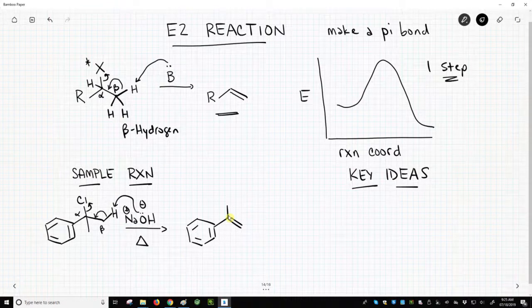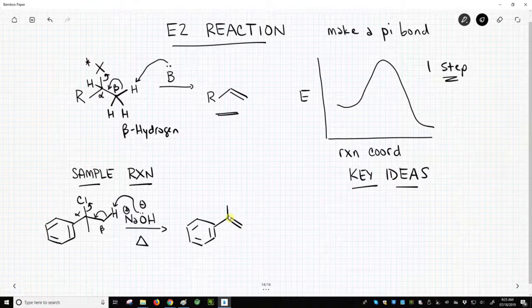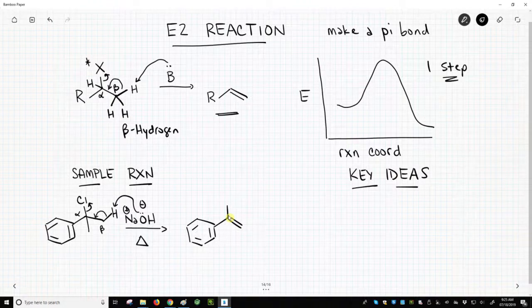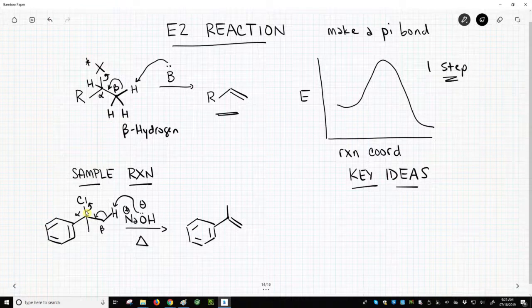This is a sample E2 reaction. The base removes the beta hydrogen, simultaneously forming a new carbon-carbon pi bond, and ejecting our leaving group, which accepts that electron density in the carbon-halogen bond.